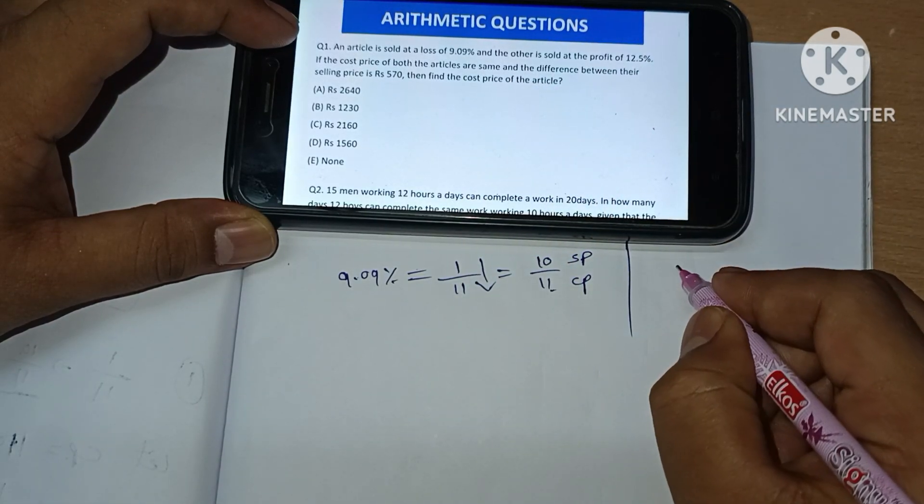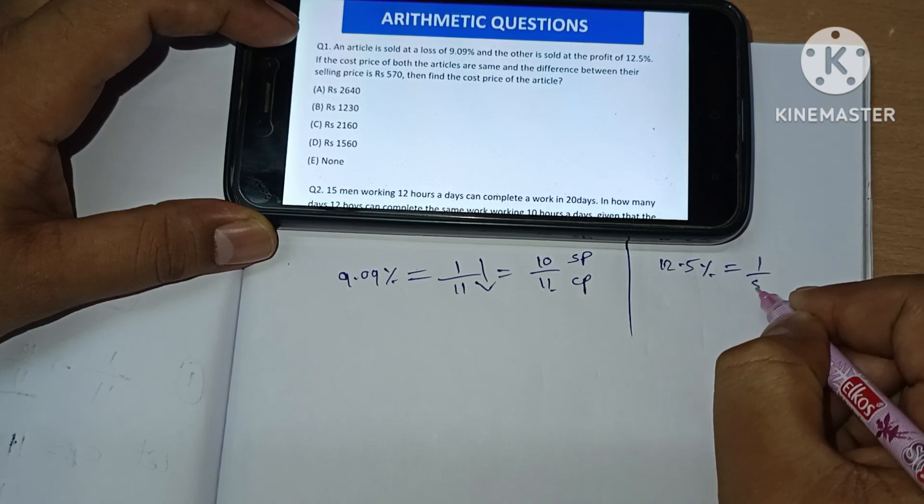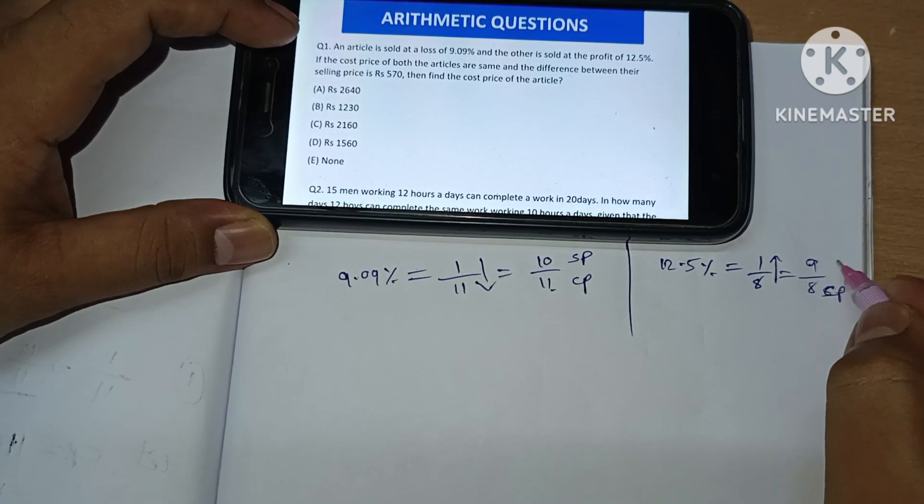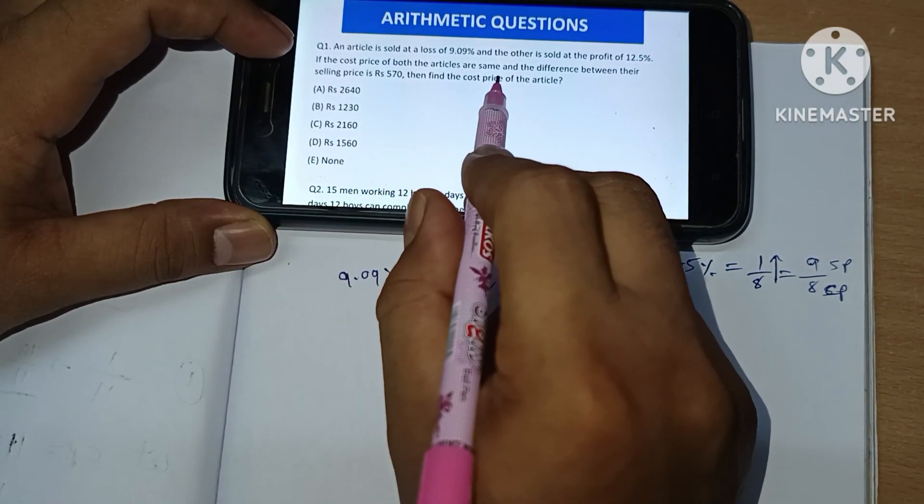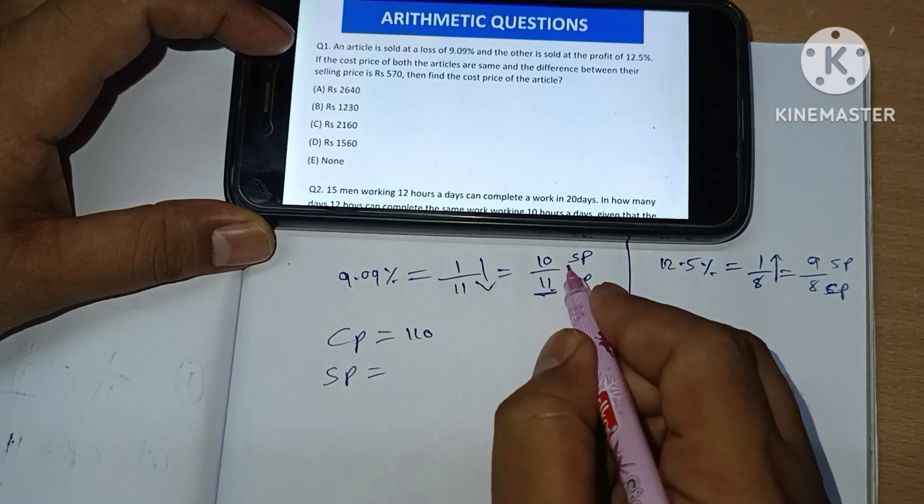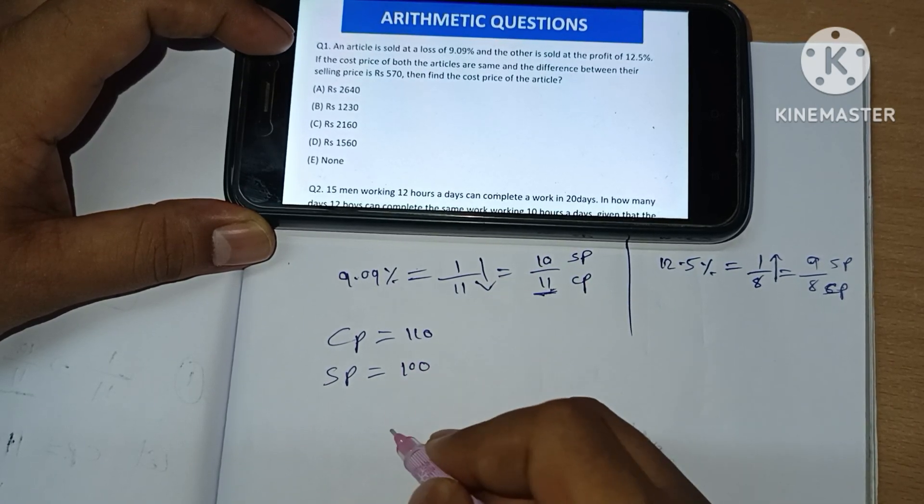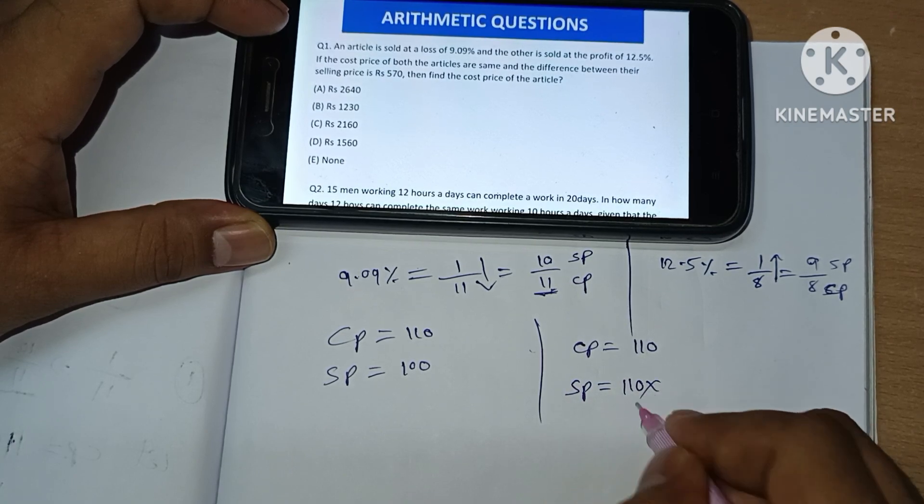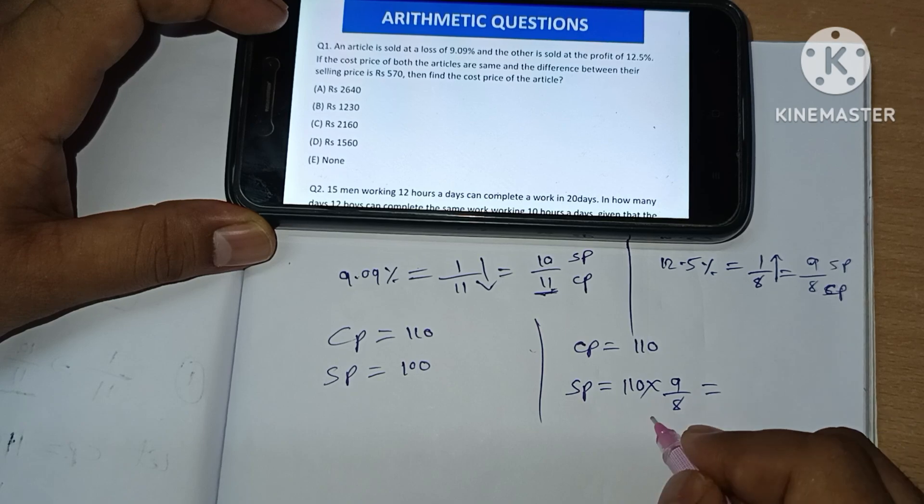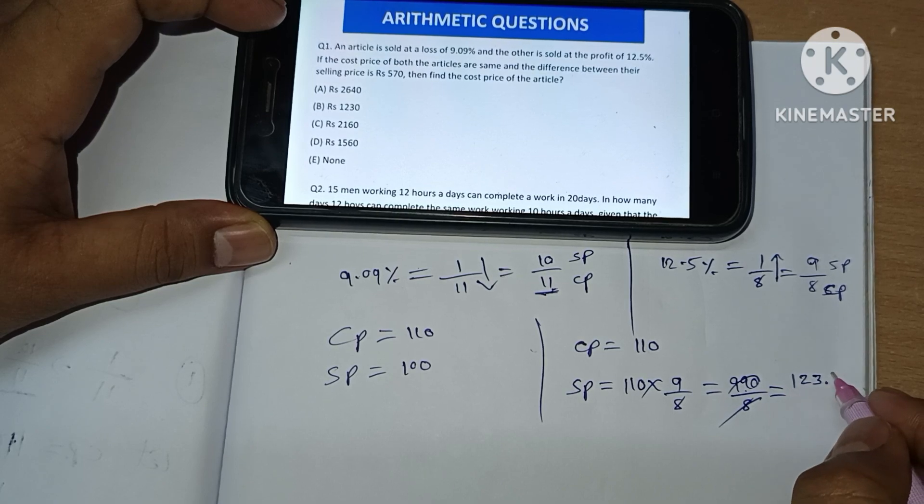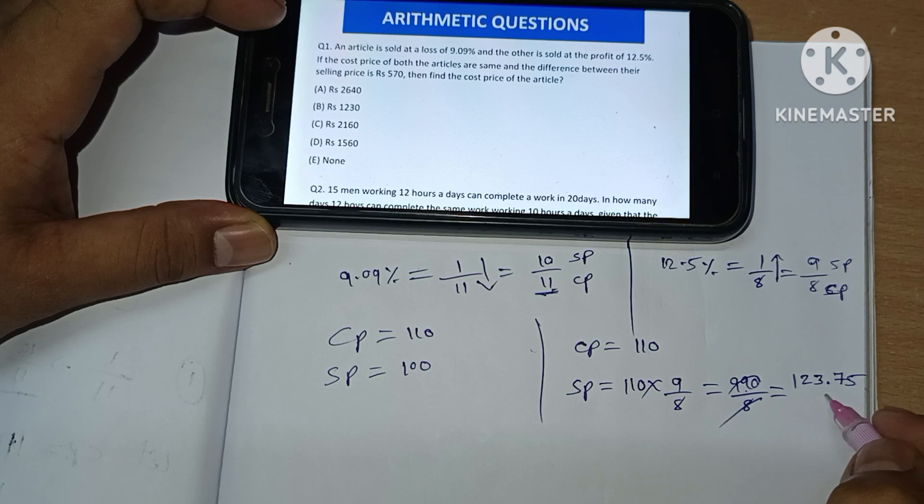Another article sold at a profit of 12.5%, which is 1 by 8. Profit means 9 by 8 - this is cost price, this is selling price. If the cost price of both articles is same, let's take CP as 110. Then selling price for the first one is 100. In the other case also, CP is same 110. Selling price will be 110 CP into 9 by 8, which will be 990 divided by 8, which is 123.75.